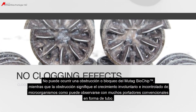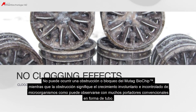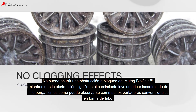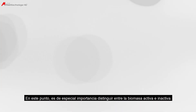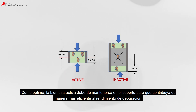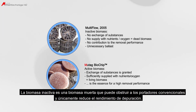Clogging or blocking of the Mutag Biochip cannot occur — clogging meaning the unintended and uncontrolled growth of microorganisms as observed with many conventional tube-shaped carriers. It is of special importance to distinguish between active and inactive biomass. Active biomass is kept on the carrier and contributes to removal performance, whereas inactive biomass is dead biomass which can clog conventional carriers and only reduces removal performance.